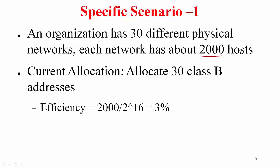Well, there are 30 different physical networks. That means you will need to allocate 30 addresses. Since each has 2000 hosts, a class C address will not suffice, you need to give class B addresses. So you will allocate 30 class B addresses and the efficiency here is you are only supporting 2000 hosts out of 2 to the power of 16 hosts, that is an efficiency of only 3 percent. You have wasted lot of addresses. Do you think we can manage with one class B address?